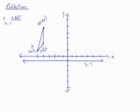So we'll just treat it like we've treated everything so far with reflection. Point A is 2 spots away from the line, so we'll go 2 spots below it. Then we end up with A prime right here.